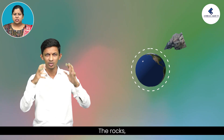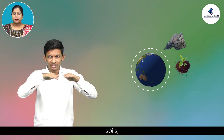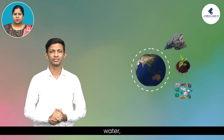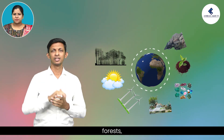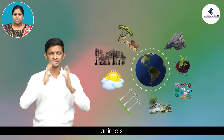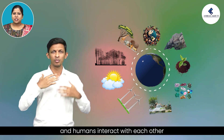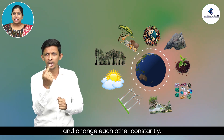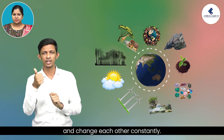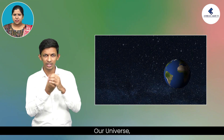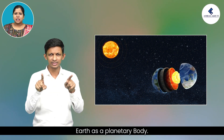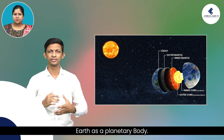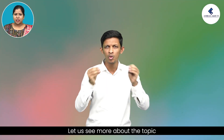The rocks, soil, minerals, water, air, sunshine, forest, animals and humans interact with each other and change each other constantly. Our Universe, the Sun and the Earth — Earth as a planetary body. Let us see more about the topic, our Earth from Class 10 social studies.